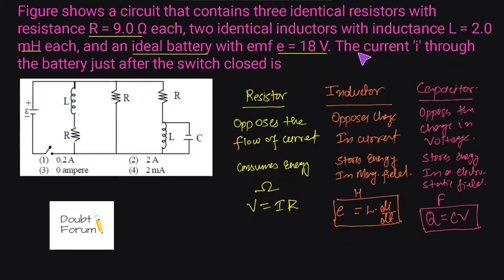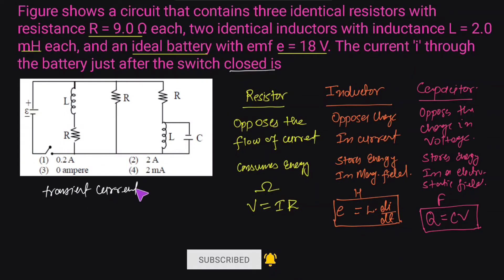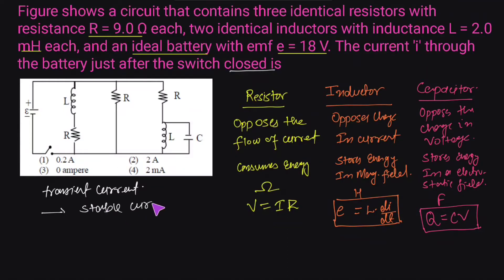The question asks for current I through the battery just after the switch is closed. Whenever R, L, and C are connected in such a circuit, two types of current flow. The first is transient current, which flows just after the switch is closed. After some time, this transient current changes into stable current. Whenever a question asks about 'just after' or 'just before' the switch is closed or opened, we must find the transient current.